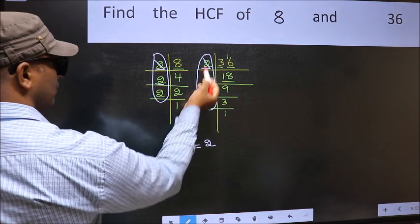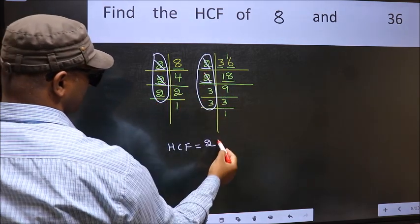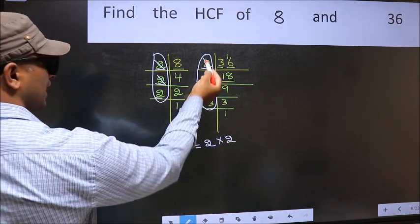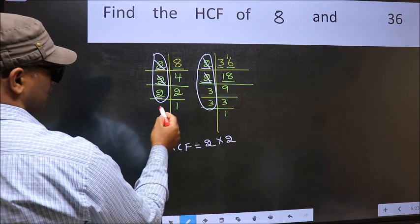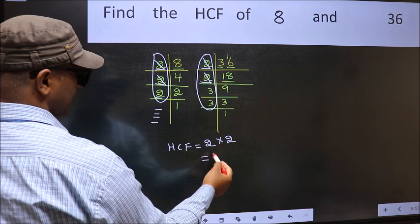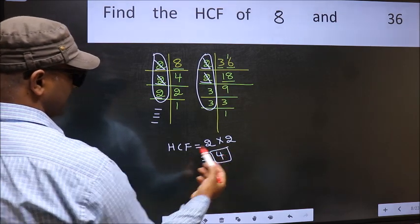Next number 2. Do we have 2 here? No. No more numbers have been left out. So our HCF is 2 times 2, 4 is our HCF.